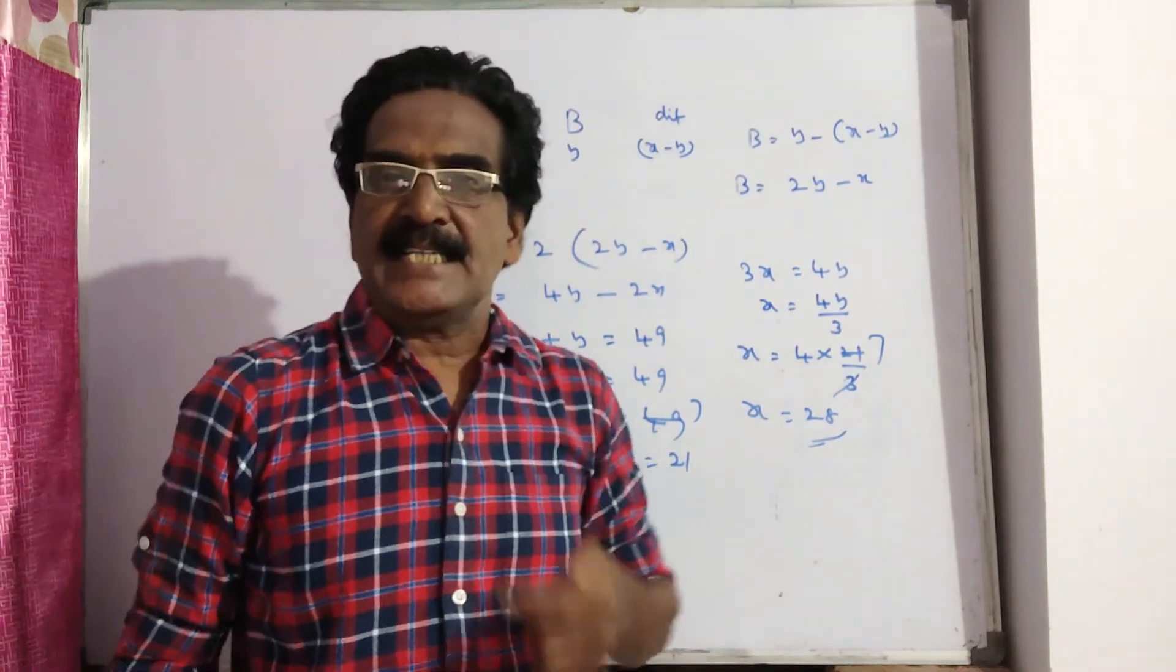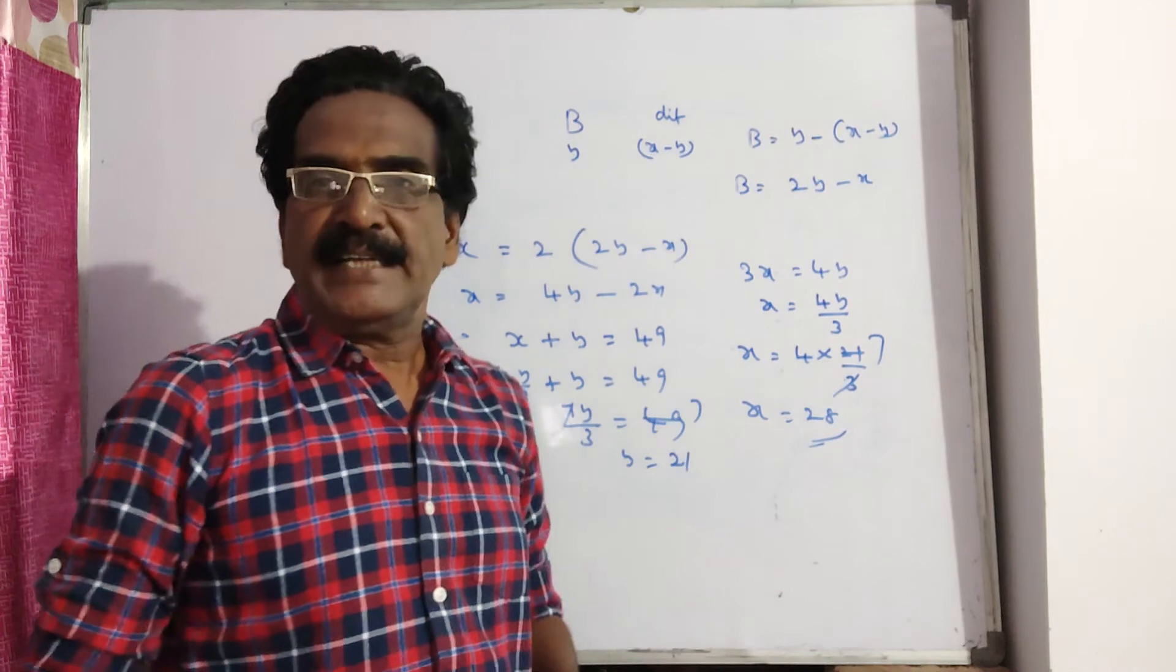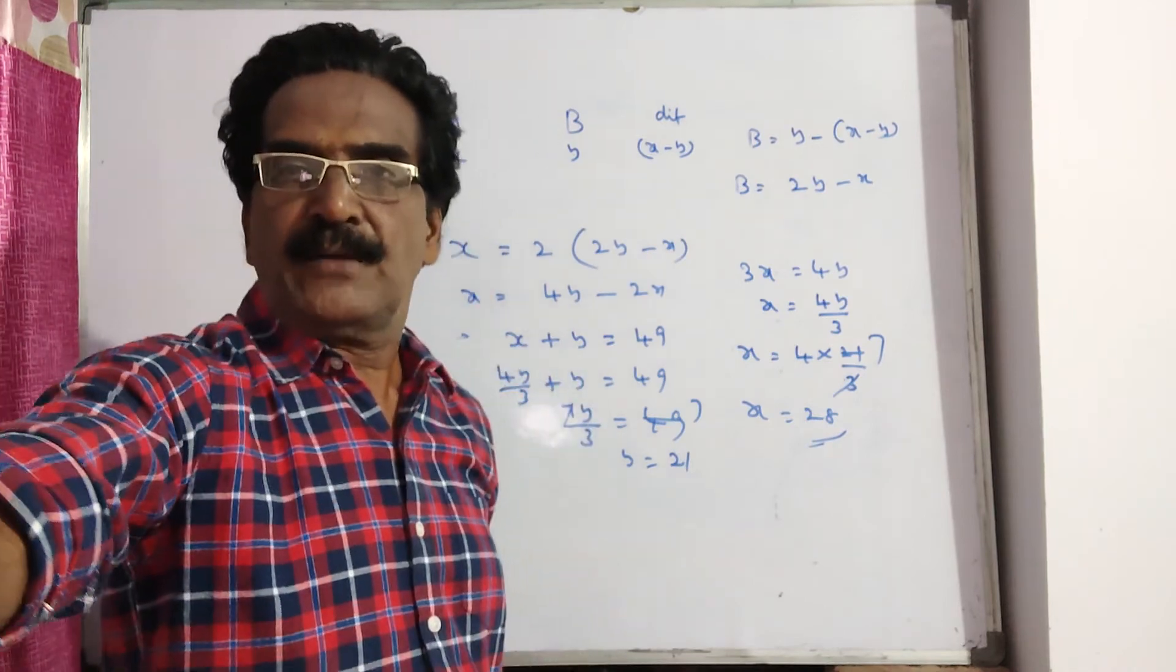So A is 28 years and B is 21 years. Okay friends, thank you. Have a nice day.